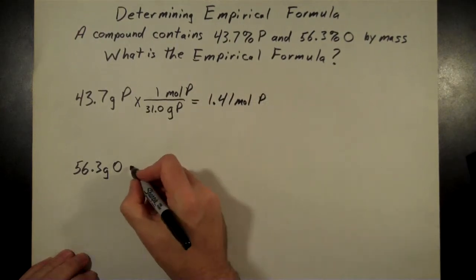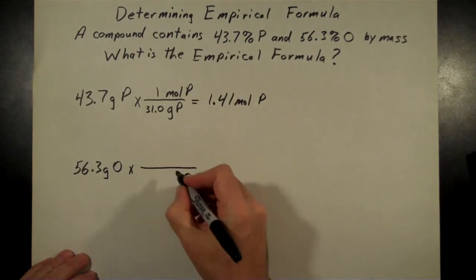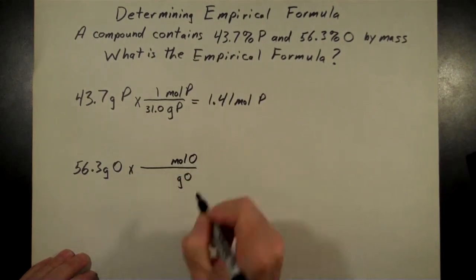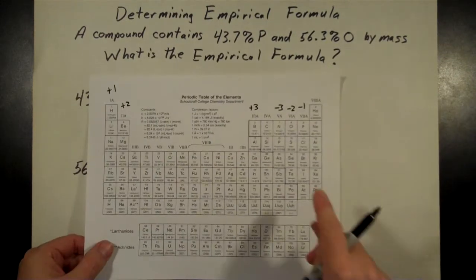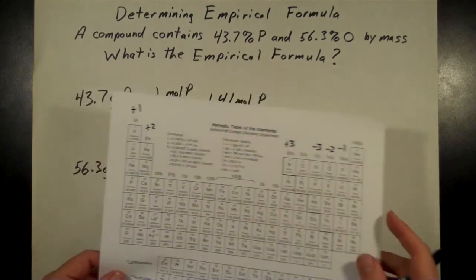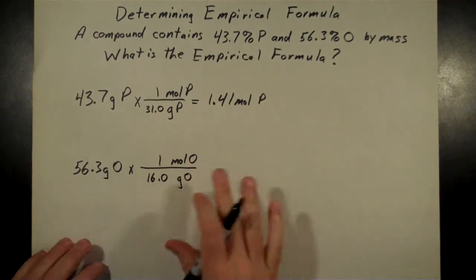Then we'll do the same thing for our grams of oxygen. We want the grams of oxygen to cancel out, moles of oxygen is what we'll put in the numerator. Back to the periodic table, 16 for the mass of oxygen. Right now we're just using those single atoms, we're not going with what oxygen is normally, diatomic.